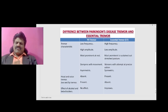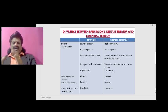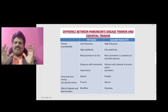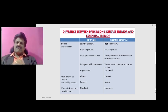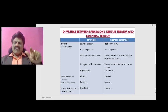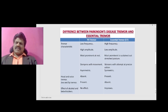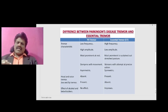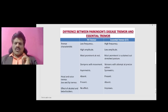It is sometimes very difficult to differentiate Parkinson's disease tremor from essential tremor. In Parkinson's disease tremor, the frequency is low and the amplitude is high. In essential tremor, the frequency is high and the amplitude is low.